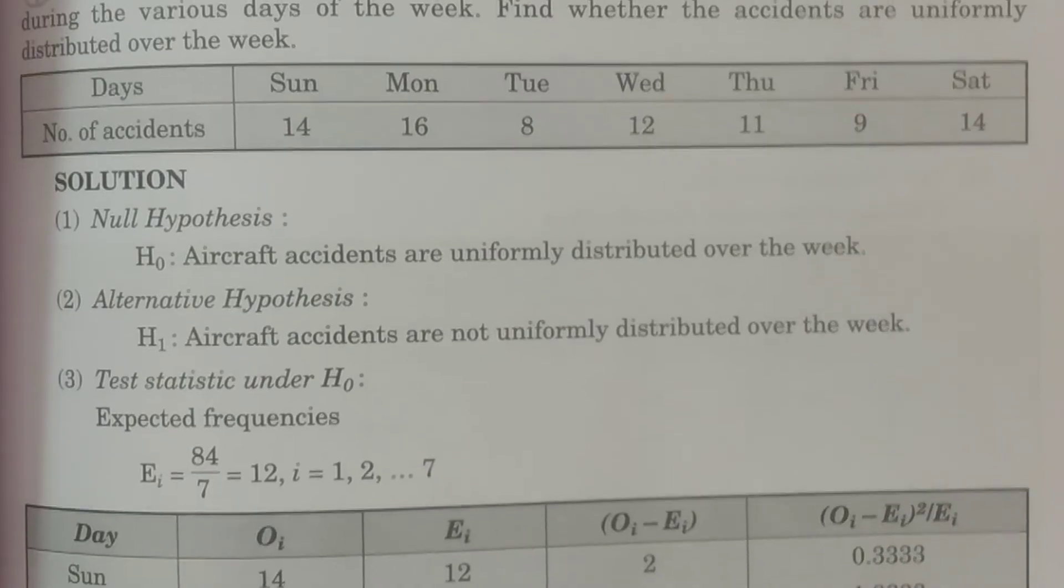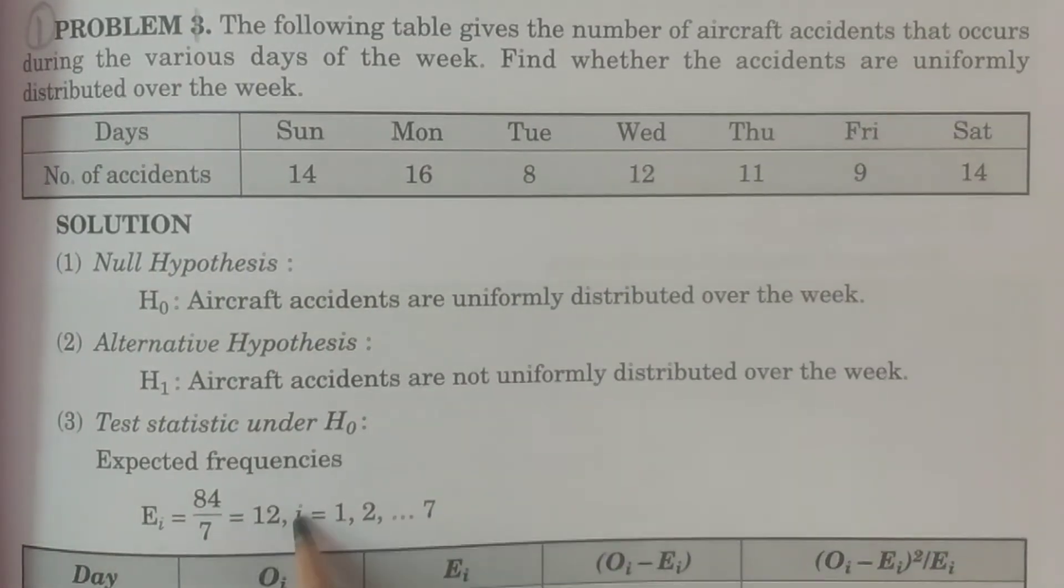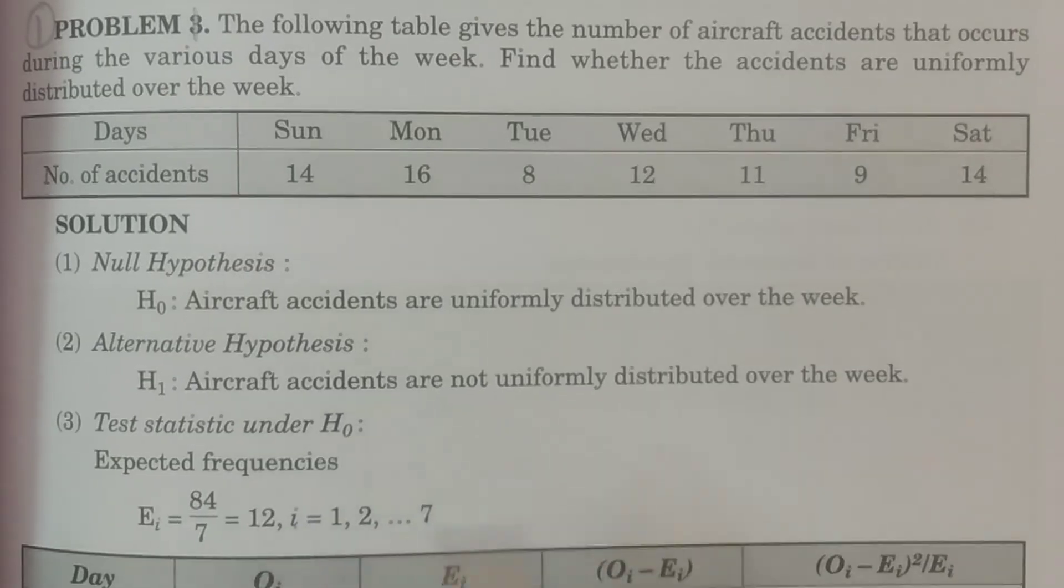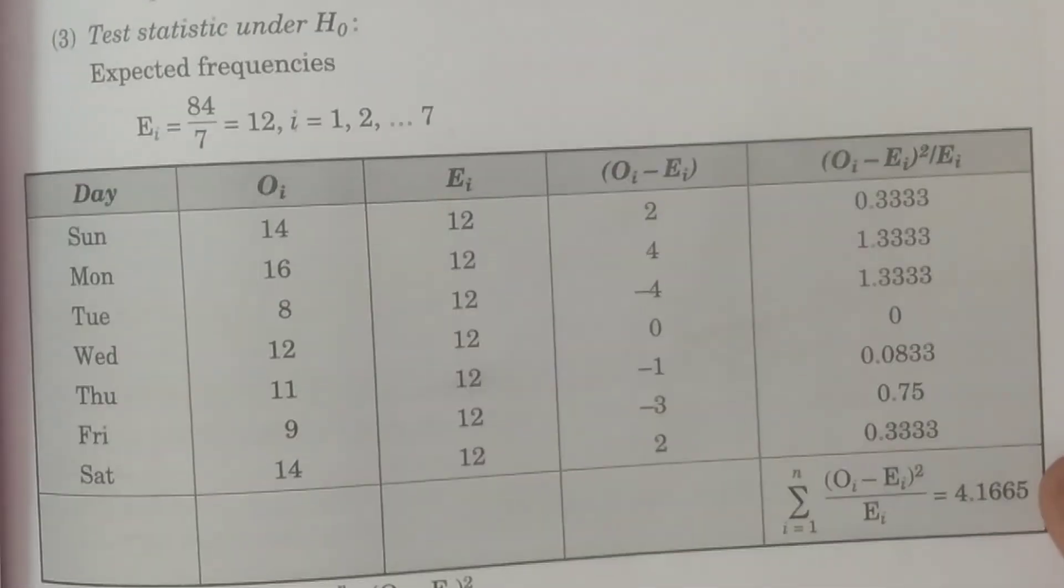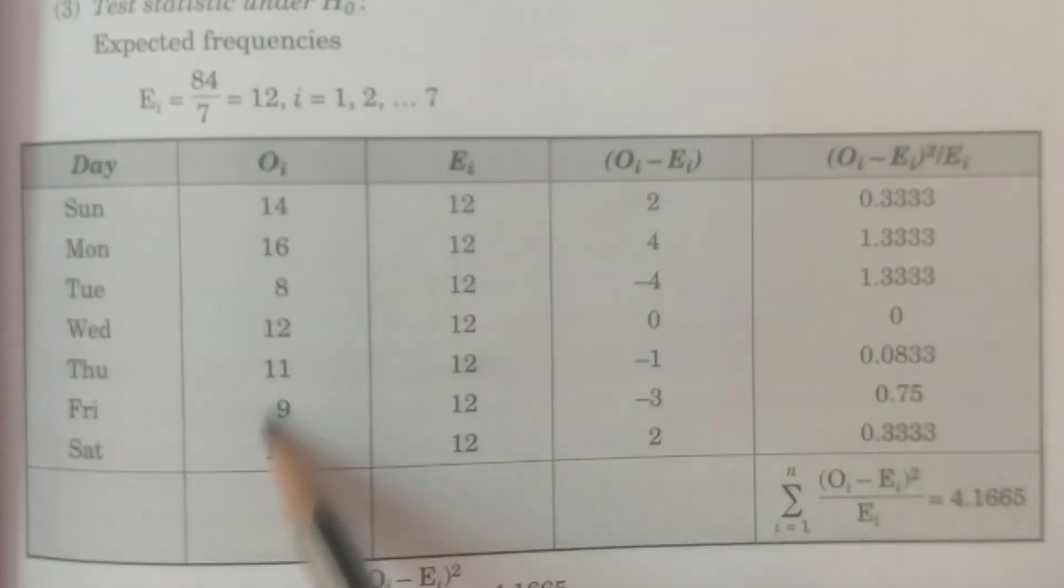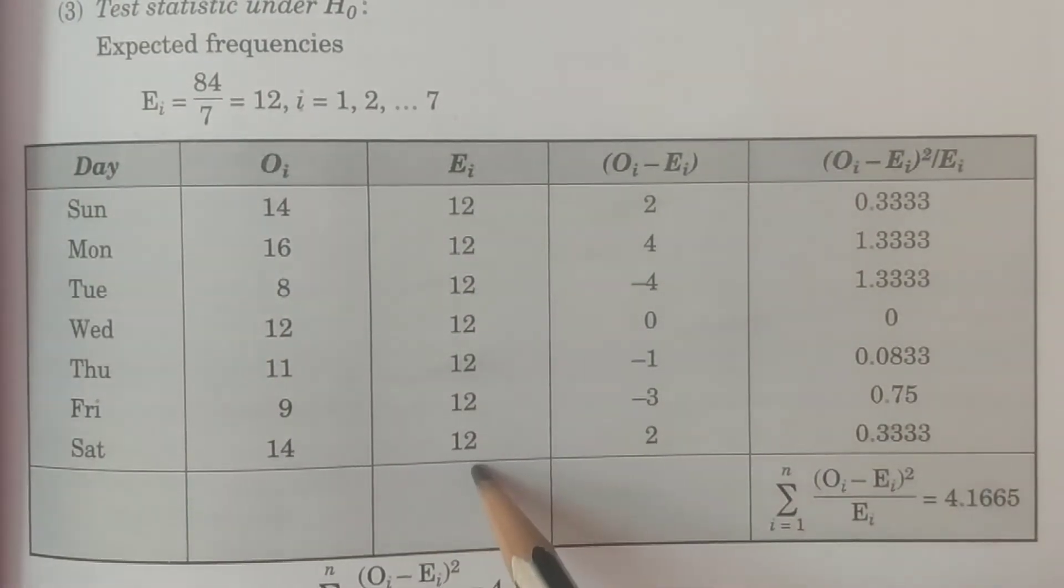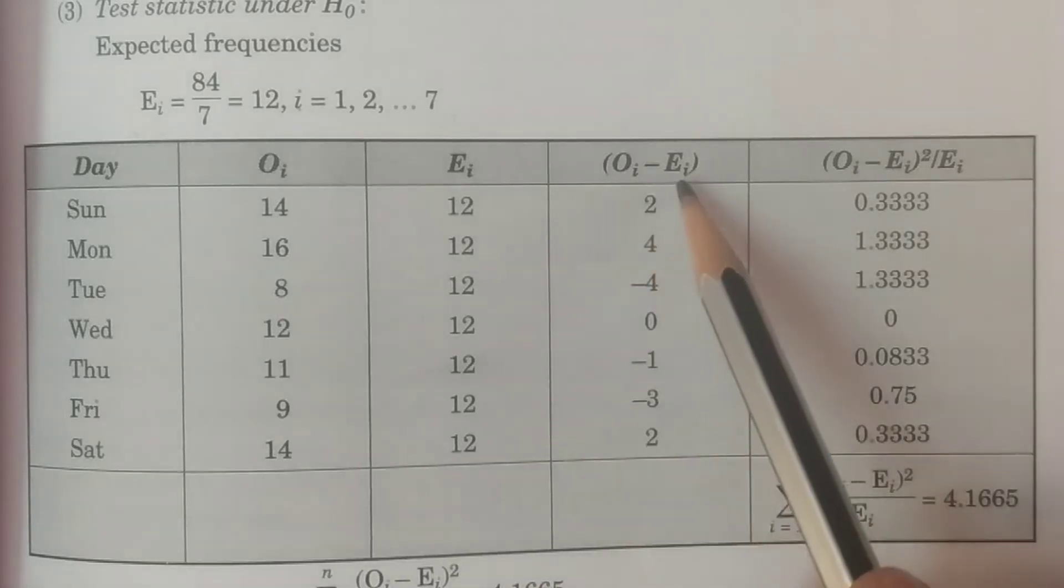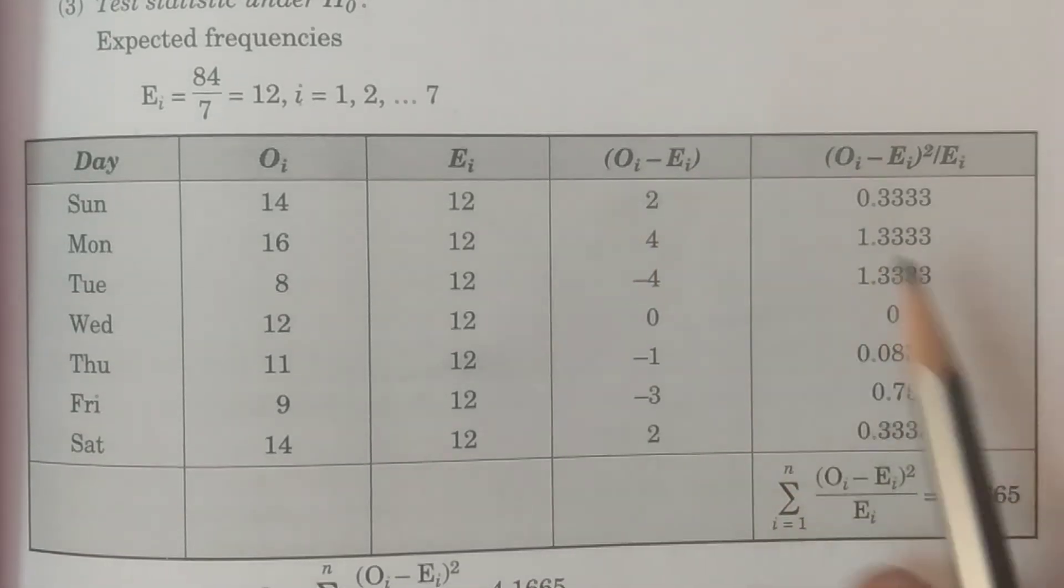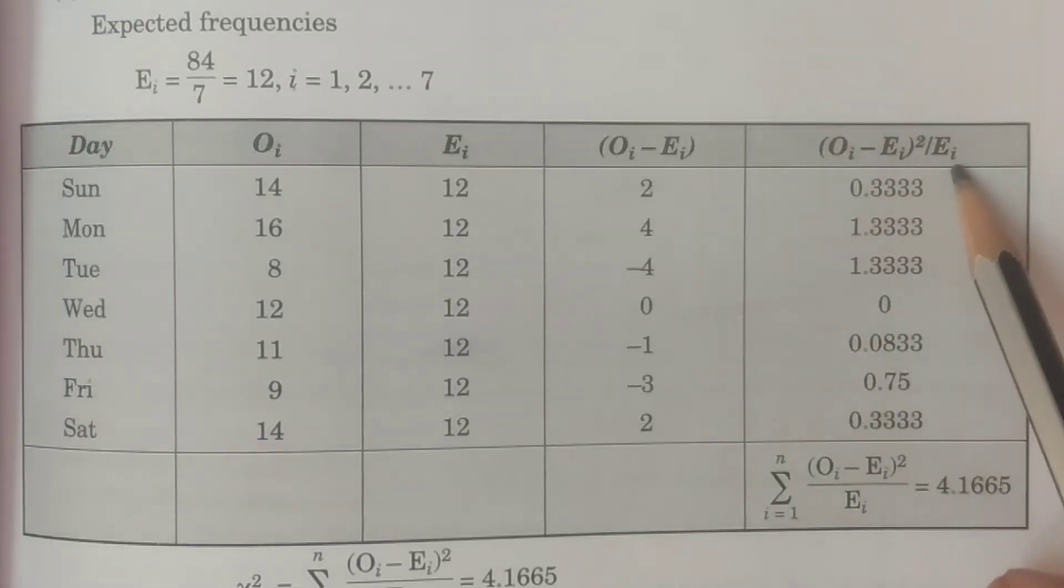Then you have to calculate now, which are the observed frequencies and we have calculated expected frequencies. Now you have to calculate this table. One, the observed frequencies Oi, second column expected frequencies Ei. And now you have to calculate Oi minus Ei and also you have to calculate (Oi minus Ei) whole square divided by Ei.